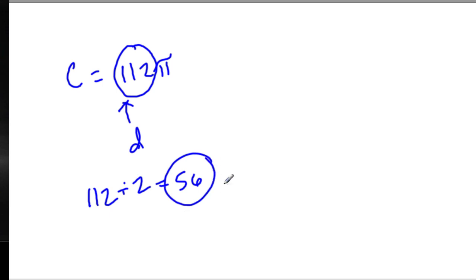In fact, whenever you have circumference written in terms of pi, this first number right here is always the diameter. And then you take that and divide it by 2, and you always get the radius.